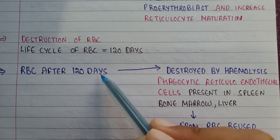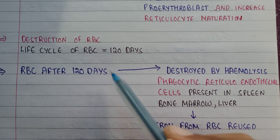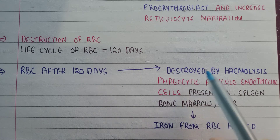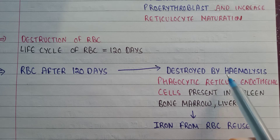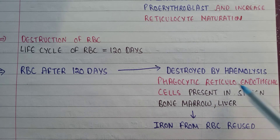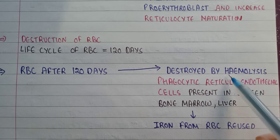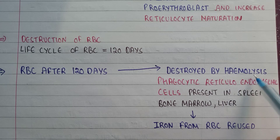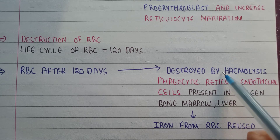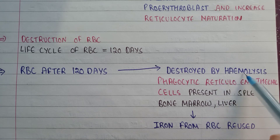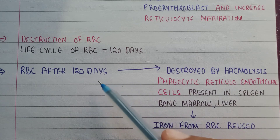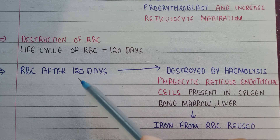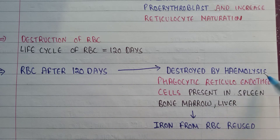The RBC will be destroyed by a process known as hemolysis. As you can see, this word is made up of two parts: 'heme' and 'lysis.' Hemolysis means the breakdown of the heme group, or breakdown of RBC, because RBC contains hemoglobin.